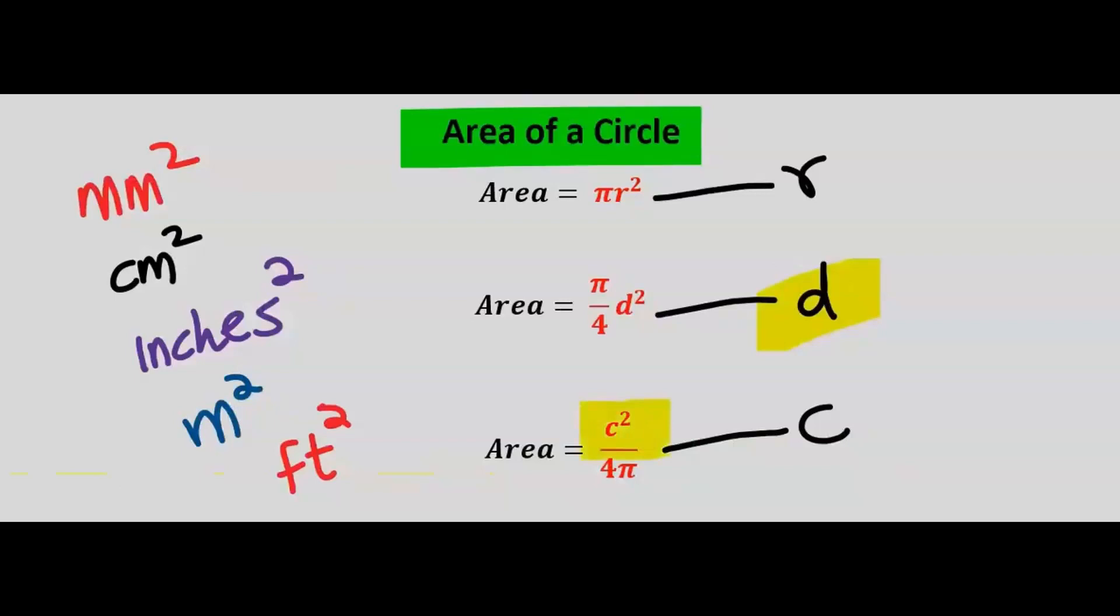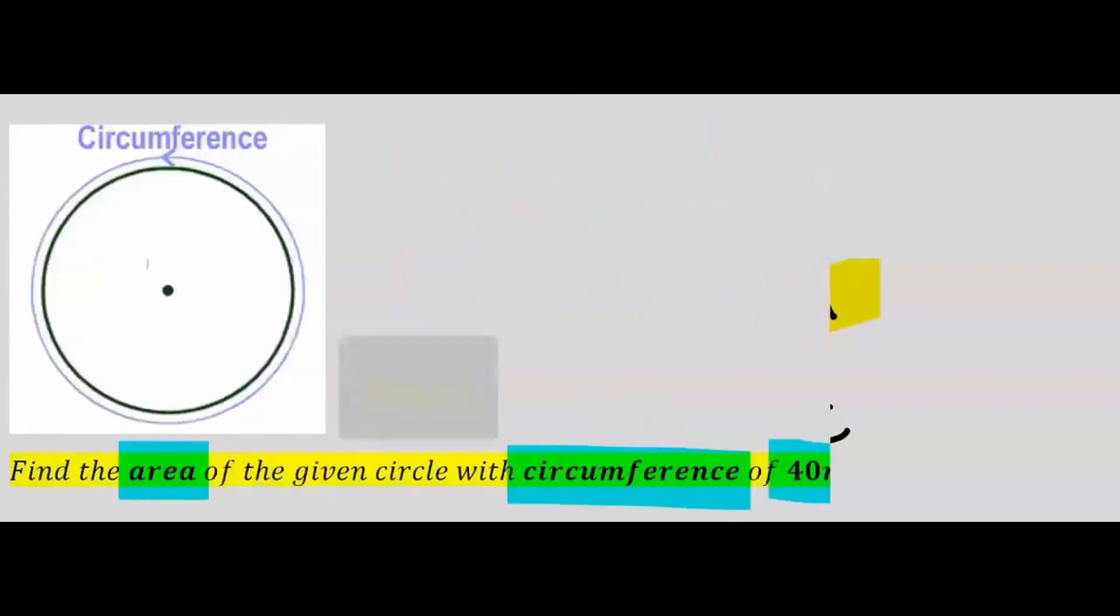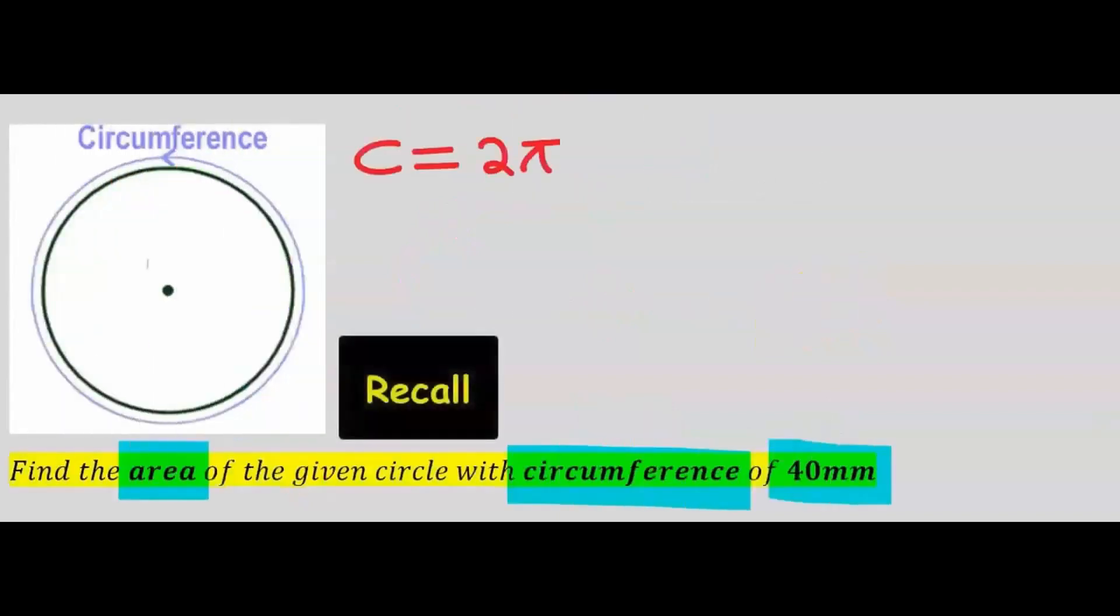the circumference squared divided by 4π. This given formula is a modification of πr². The formula for the circumference of a circle is 2πr, but